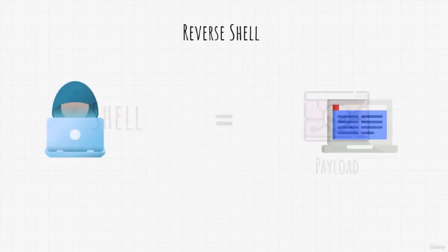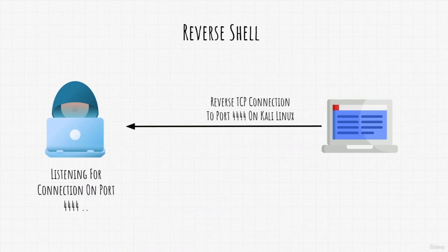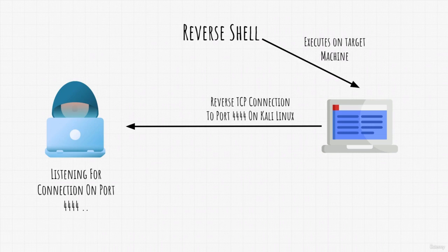Reverse shells are something that you will use a lot. It works on the principle of the target machine trying to connect back to our Kali Linux machine. For this to work, on our Kali Linux machine we must first listen for the incoming connection over some port. Then we exploit the target and drop a shell, which will tell the target machine to connect to our port on Kali Linux that we're listening on. After it completes the connection, we can then control that machine.